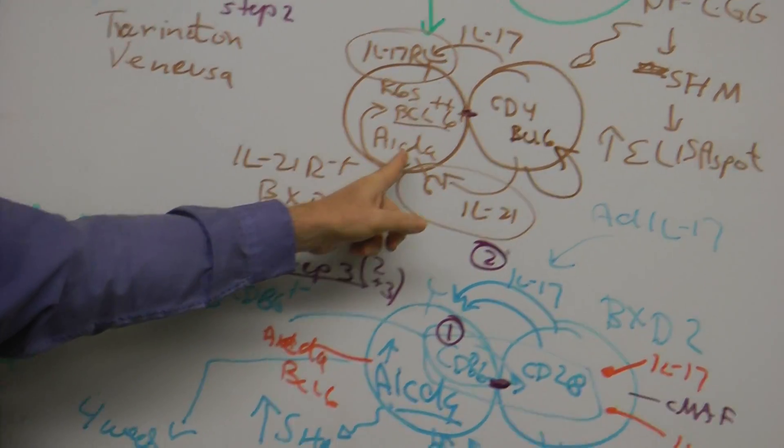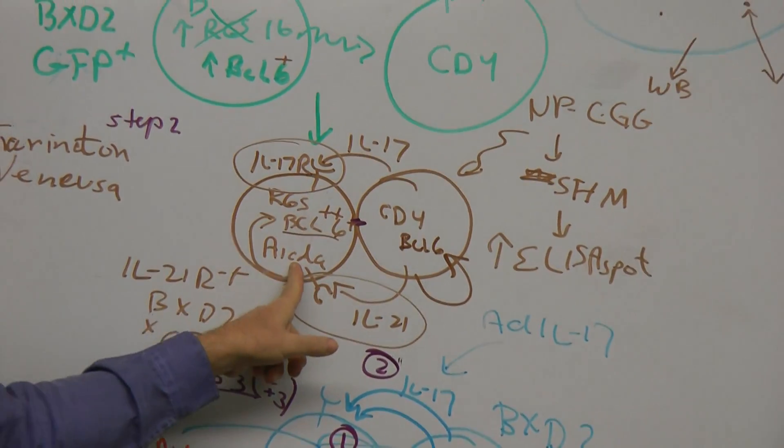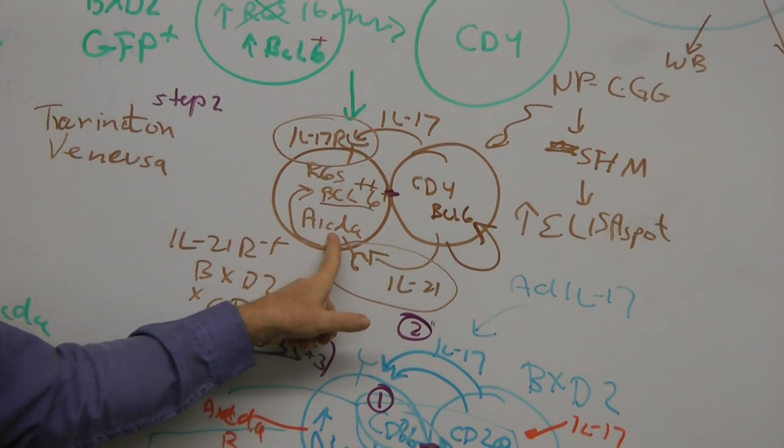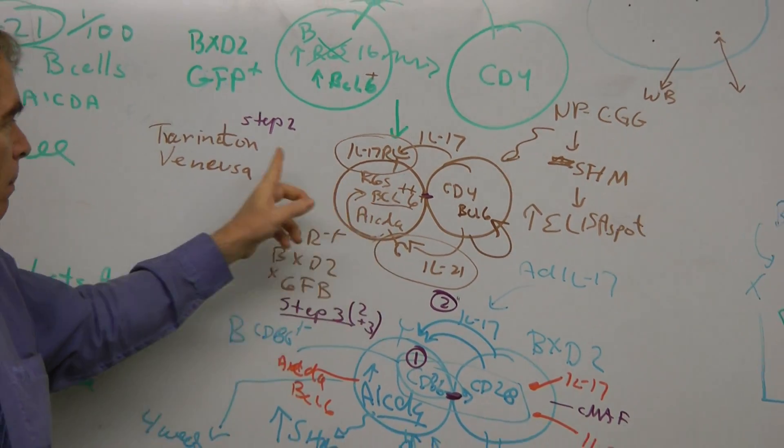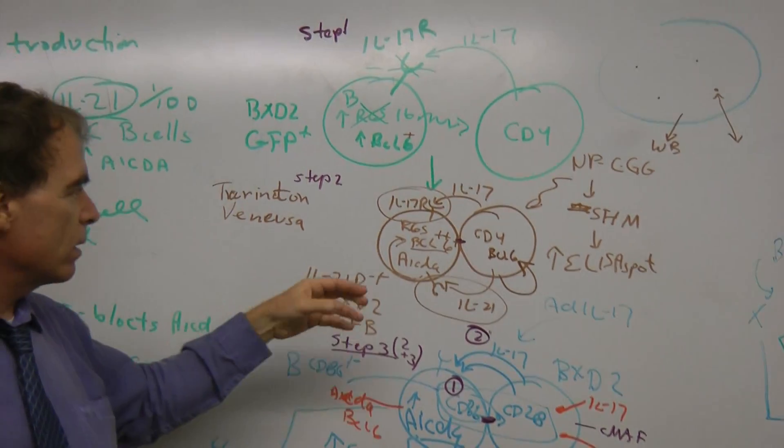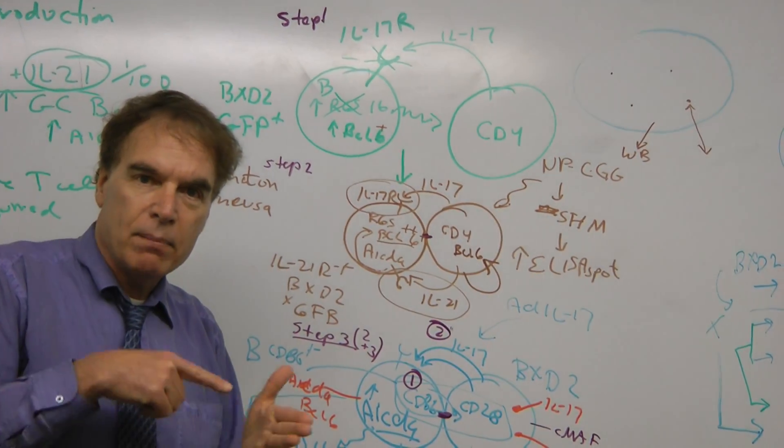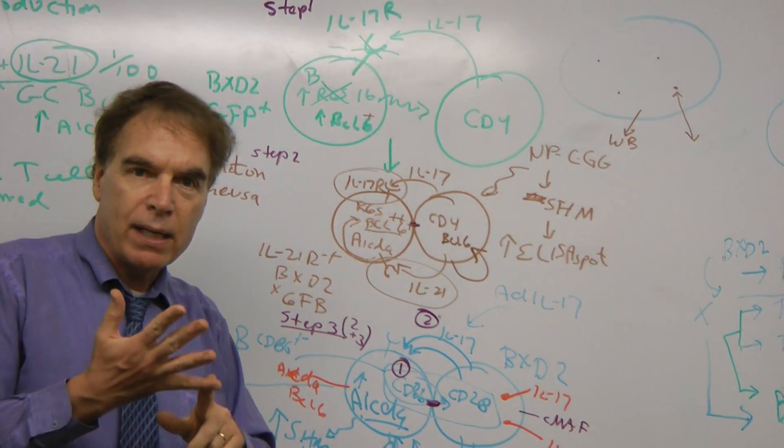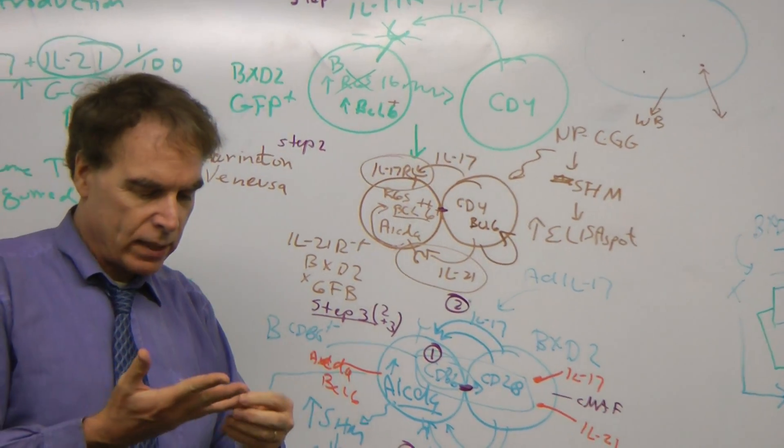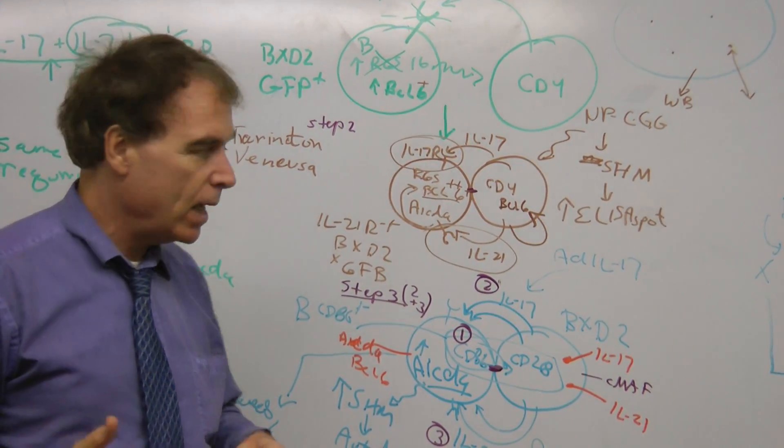One reason why we think it regulates activation-induced cytidine deaminase is not only is it high in the BXD2 B cells, but these B cell precursors show that IL-21 acts directly on B cell germinal centers to upregulate BCL-6, which makes sense, and also upregulate somatic hypermutation.